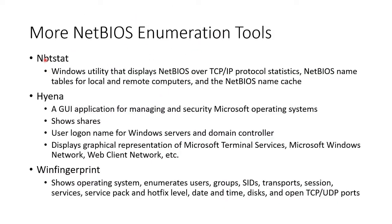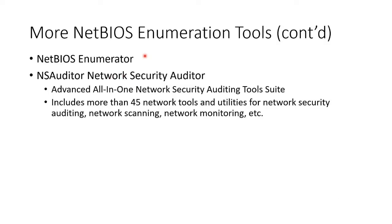There are other tools as well. NBT-STAT is the built-in Microsoft command-line tool that gives you TCP/IP NetBIOS statistics including the name, groups, and workgroup information. There's also Hyena, a GUI tool from Microsoft that shows shares and logon names with graphical representations of all these services. Another tool called Win Fingerprint enumerates users, groups, SIDs, transport, sessions, services, service packs, hotfix levels, dates and times, disks, and open ports. There's also the NetBIOS Enumerator and the NS Auditor Network Security Auditor — an all-in-one tool with about 45 tools.